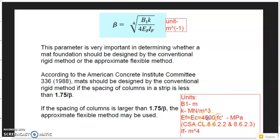So if the foundation is concrete, then we can use this formula to calculate with its concrete elastic modulus. Or we can use ACI equations. If our column spacing is greater than 1.75 over β, then you have to use approximate flexible method.